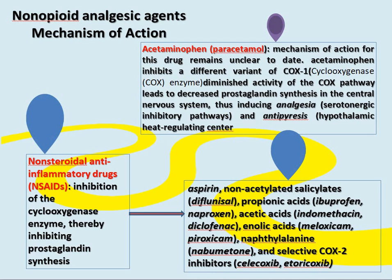Starting with acetaminophen/paracetamol, its mechanism of action remains partly unclear. It inhibits a variant of the cyclooxygenase enzyme, reducing prostaglandin synthesis in the central nervous system. It induces analgesia through inhibitory serotonergic pathways, and antipyresis by acting on the hypothalamic heat-regulating center.